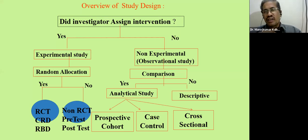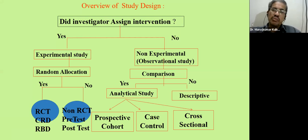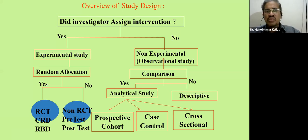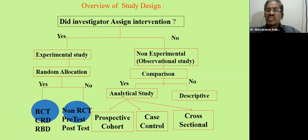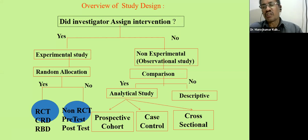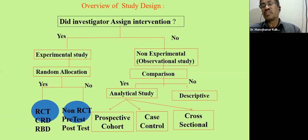If there is no comparison, it is called a descriptive study. During the first day's presentation, we covered what are the different types of studies conducted. If you are going for an analytical study, you can choose a prospective study, case-control study, or cross-sectional study. Cross-sectional studies are usually surveys where we measure all the outcome variables — both independent and dependent — simultaneously, and measurements are made only once. There is no follow-up, unlike a prospective study.